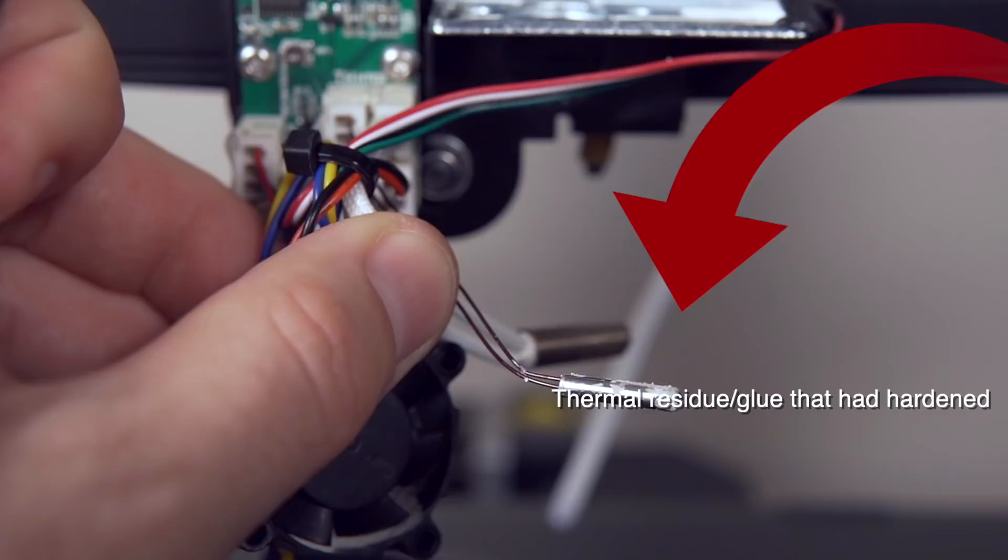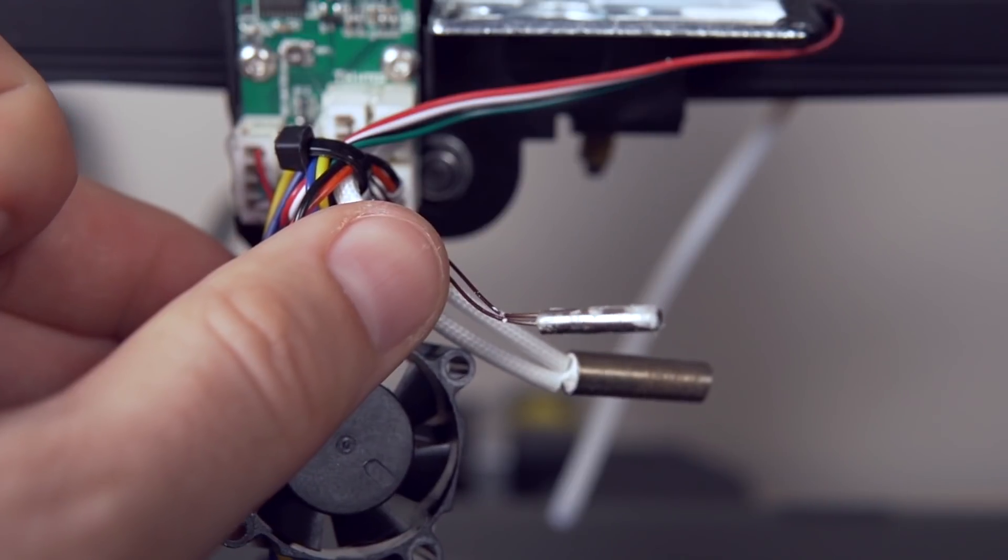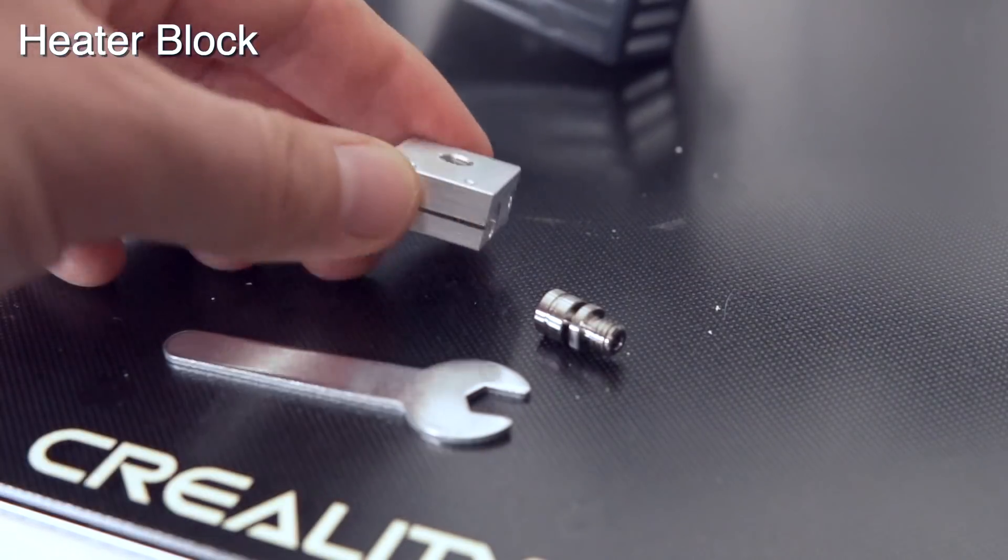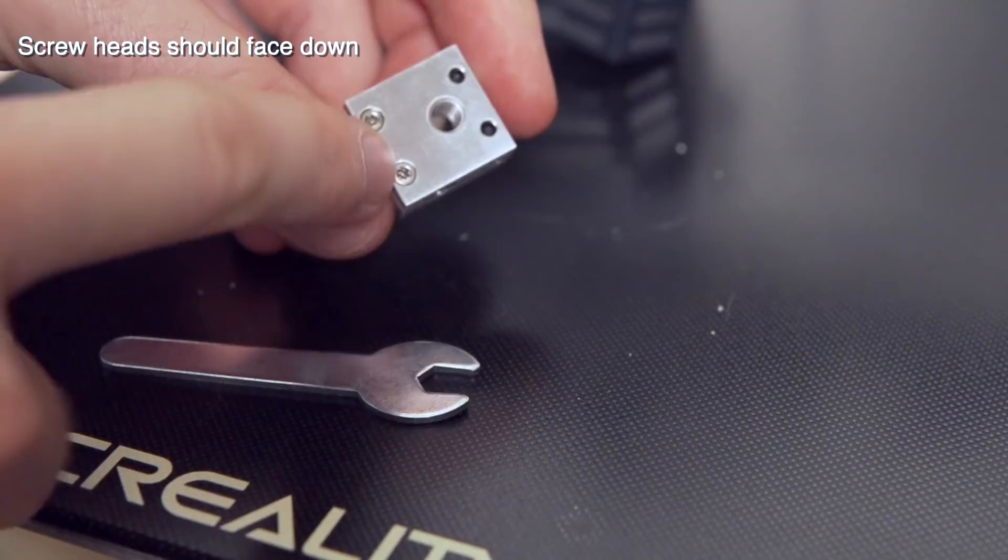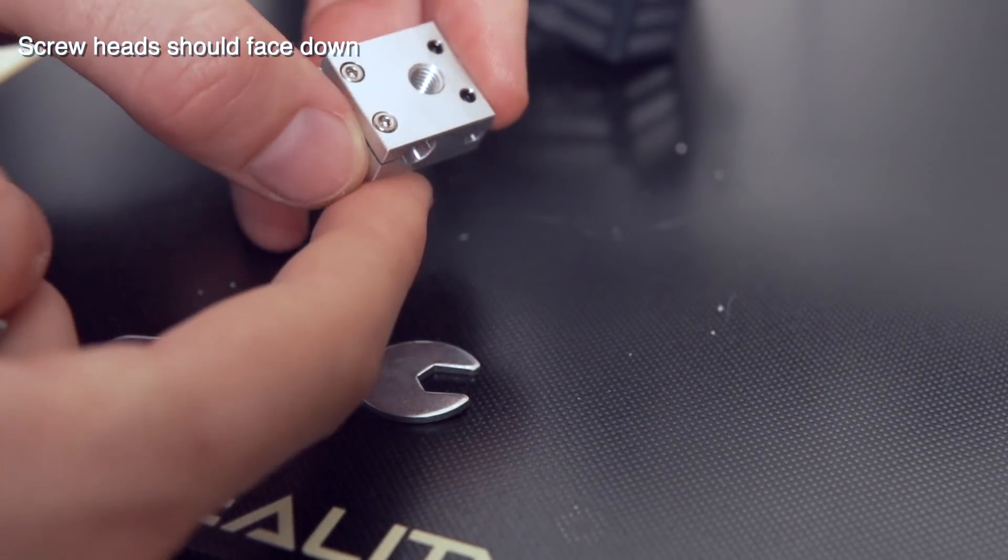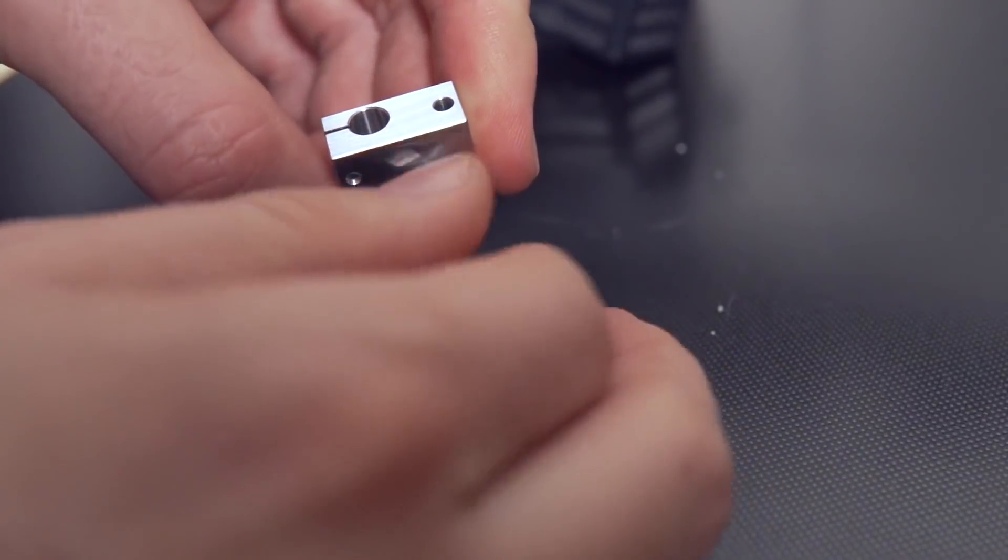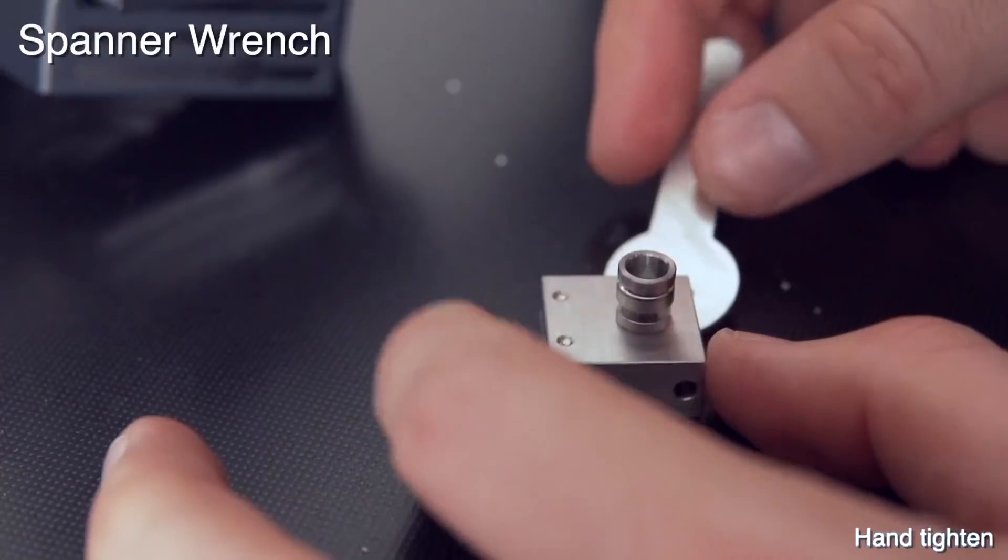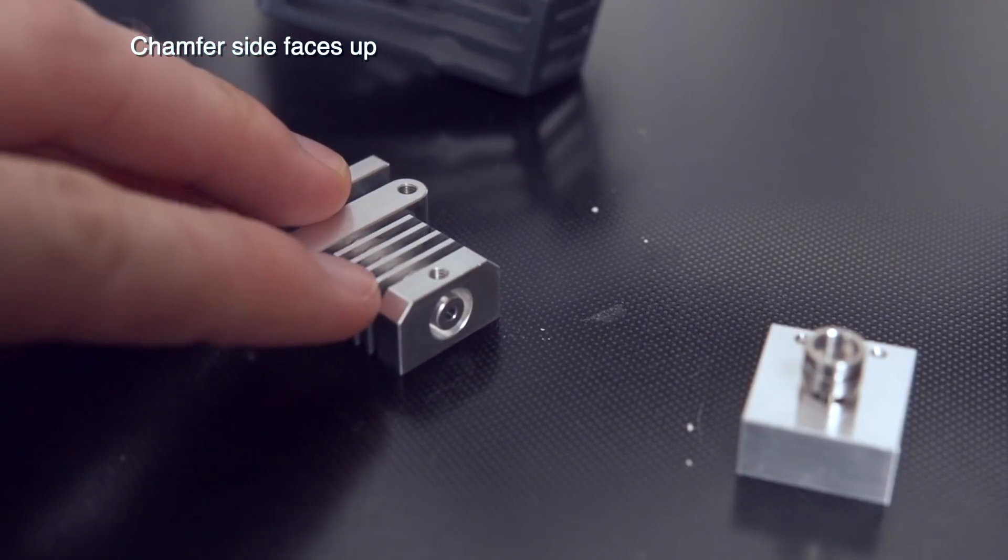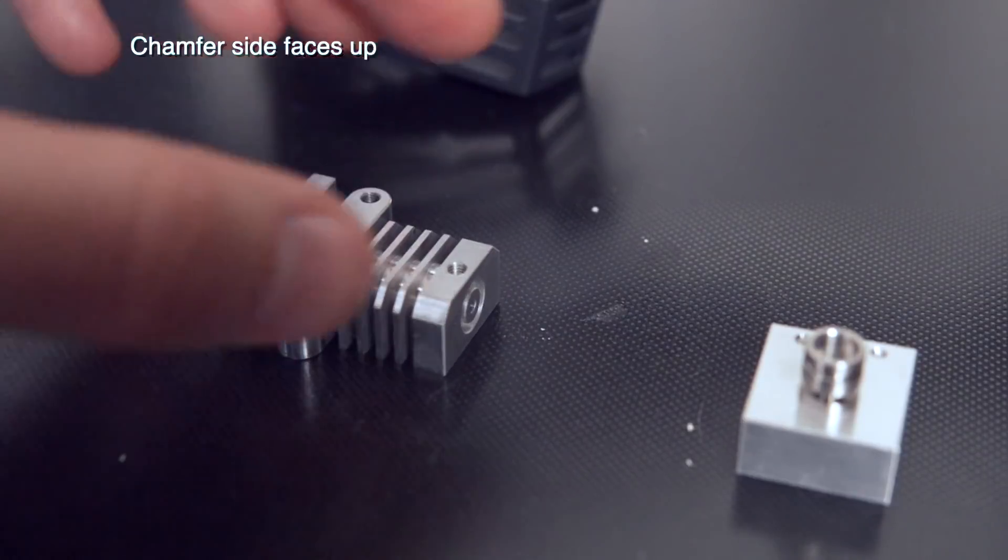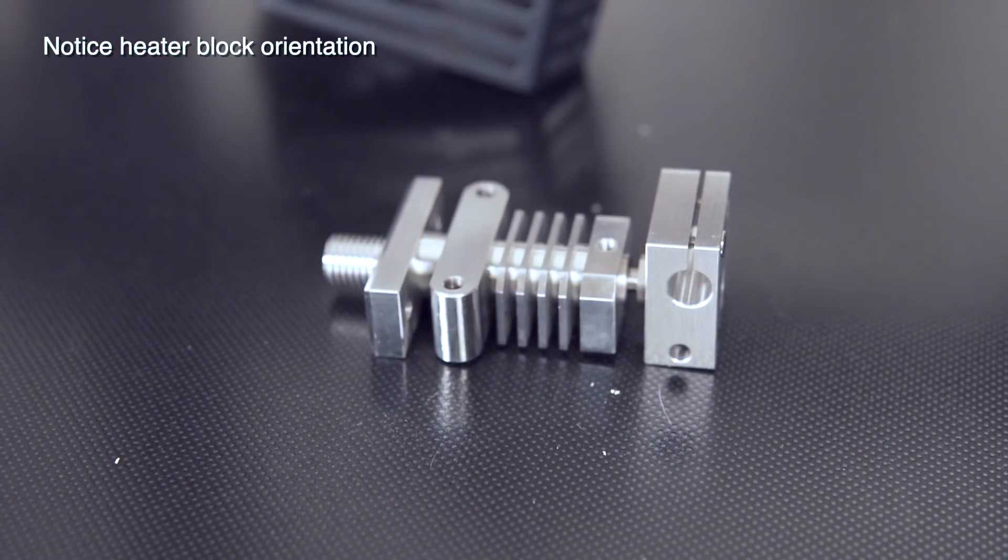Yours might not be as difficult, but if you look on mine, there's some thermal residue slash glue that had hardened it in place. And so that's really what was holding this thing inside of that slot. Now that we've got that removed, we're ready to take our new heater block and our new heat break and install those into each other. It's easy to determine the correct side. The side of the heater block with the screw heads should be facing downward and you want to install the heat break on the opposite side of that. So I just go ahead and thread that in with my hands and then I grab the included spanner wrench and tighten that heat break into the heater block.